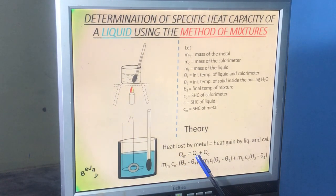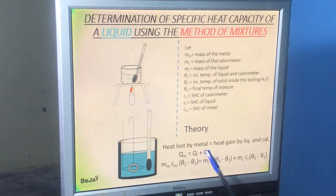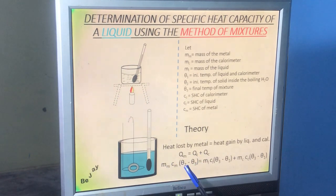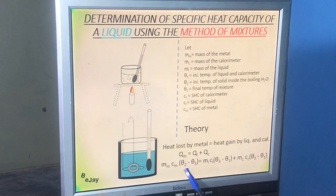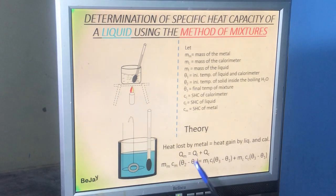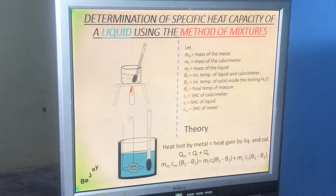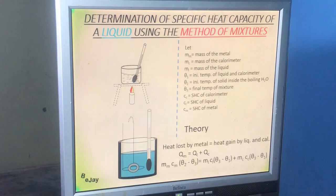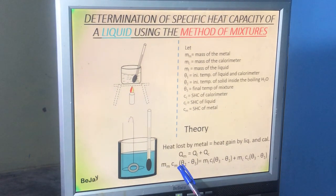From this theory: Qm = Ql + Qc, where Q represents sensible heat quantities. Therefore: mm × Cm × (θ2 − θ3) = ml × Cl × (θ3 − θ1) + mc × Cc × (θ3 − θ1). This part confuses students because of θ2 and θ3. Remember, change in temperature is a scalar quantity and must be positive — always subtract the smaller temperature from the bigger temperature.